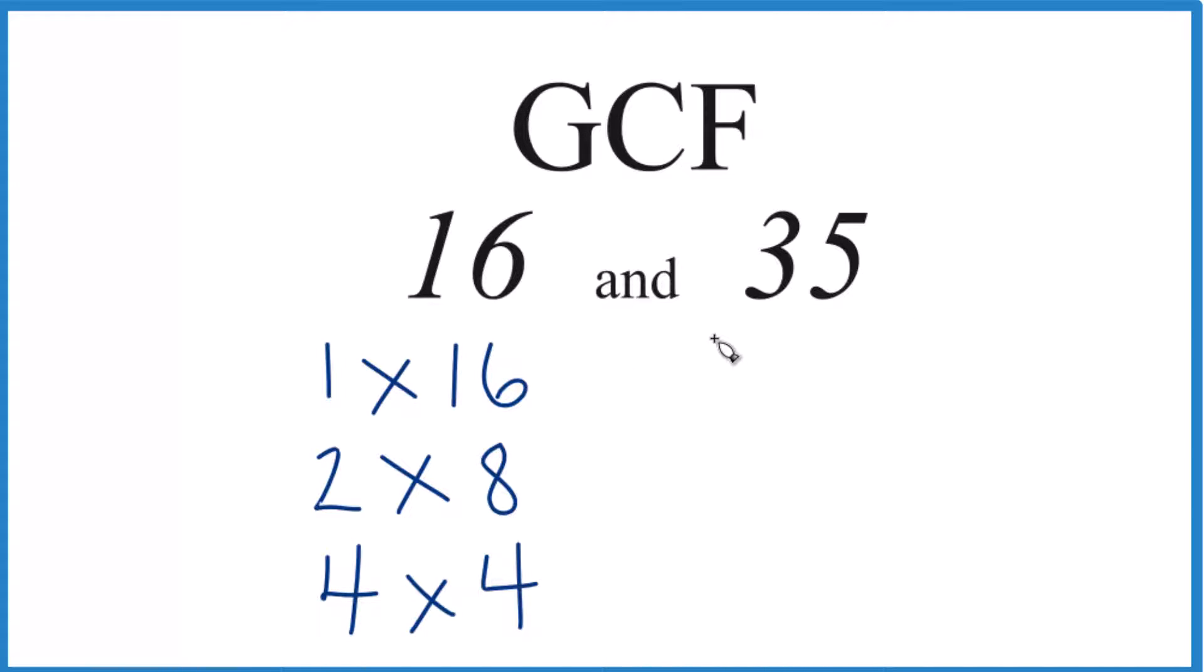For 35, 1 times 35, and it looks like 5 times 7. So those are the only factors we have for 35. So we have our factors, let's see what's in common.